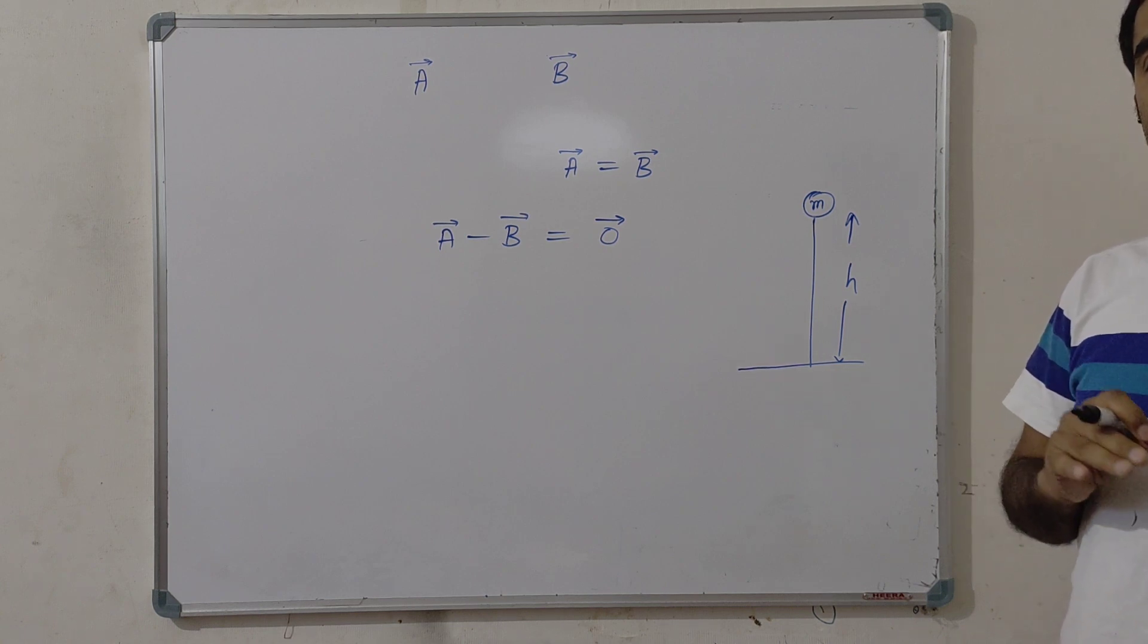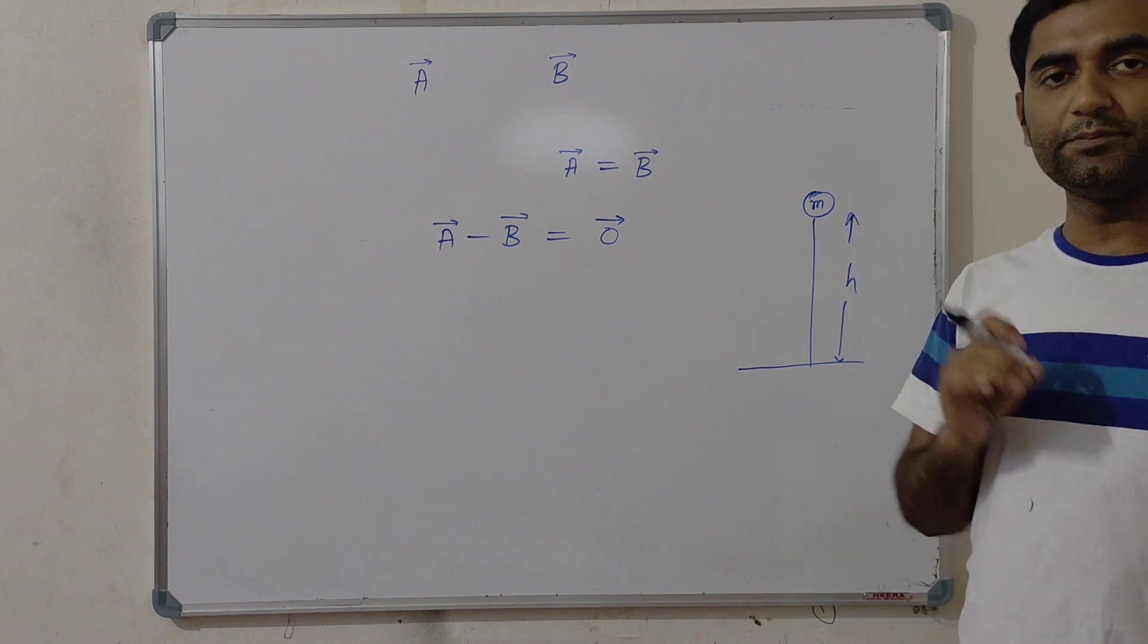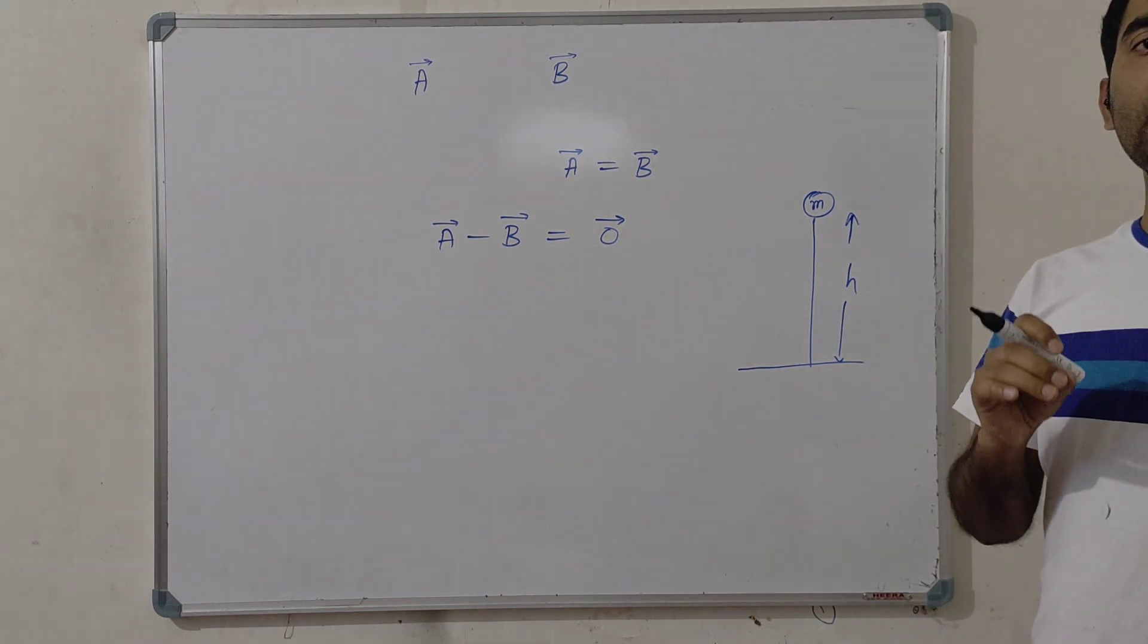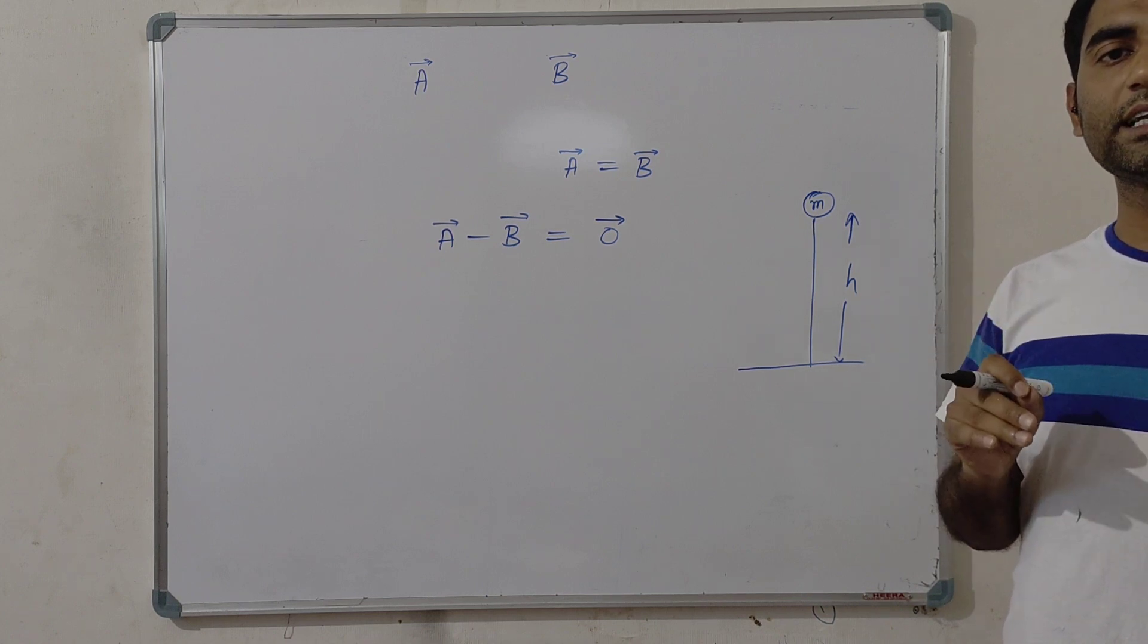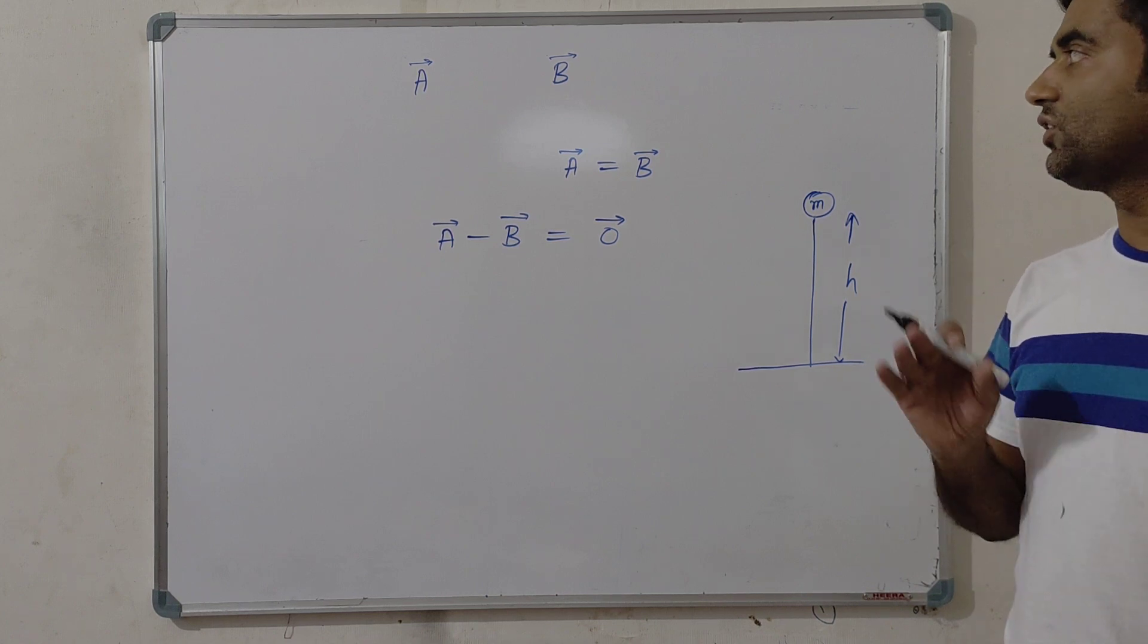Again, if a particle is moving in uniform velocity, then its acceleration is also 0. So this acceleration 0 is also a 0 vector.